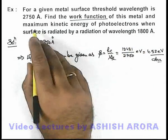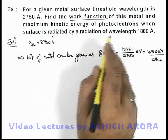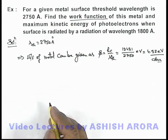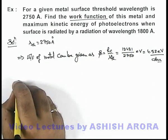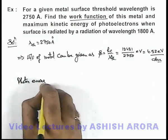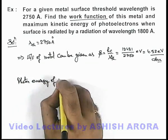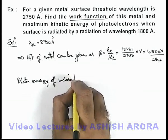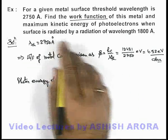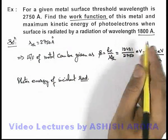Now it is also asking the maximum kinetic energy of photoelectrons when the surface is radiated by the radiation of wavelength 1800 angstrom. So if we calculate the photon energy of incident radiation, then we know that in incident radiation the wavelength of radiation is 1800 angstrom.